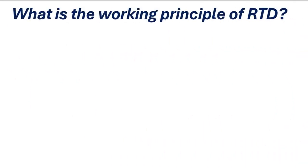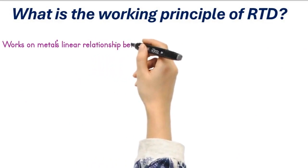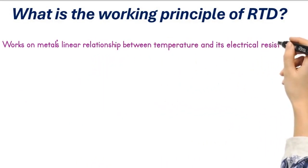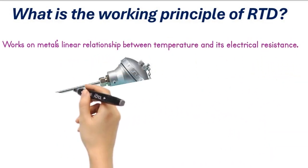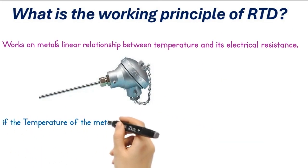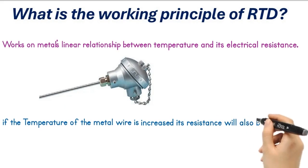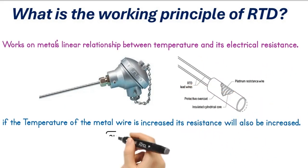What is the working principle of RTD? RTD works on the metal's linear relationship between temperature and its electrical resistance. It says that if the temperature of the metal wire is increased, its resistance will also be increased. An RTD consists of a pure platinum wire coil enclosed in a protective sheath. When the temperature changes, the resistance of the platinum wire also changes. This change in resistance is proportional to the change in temperature.